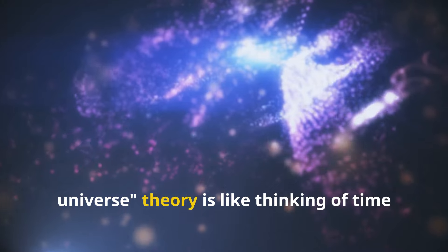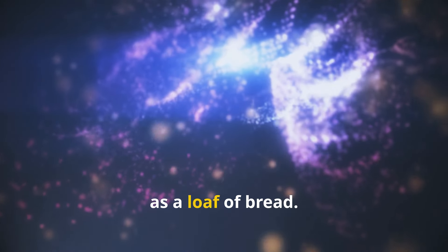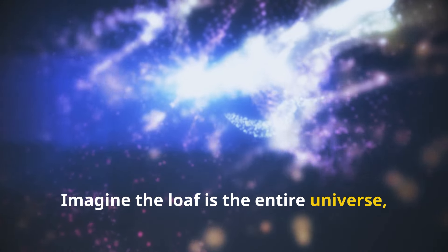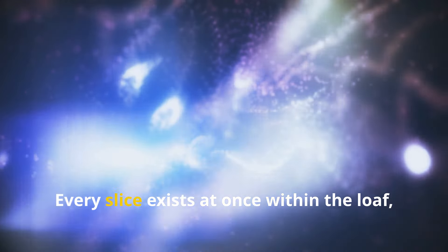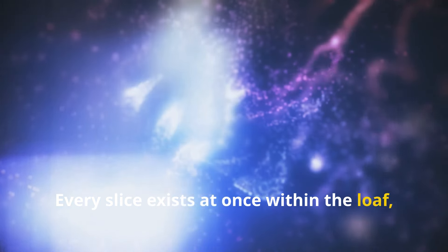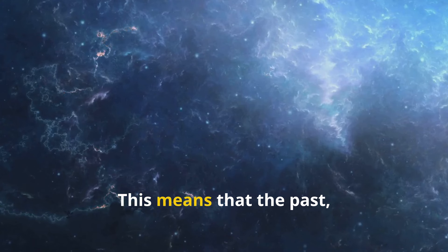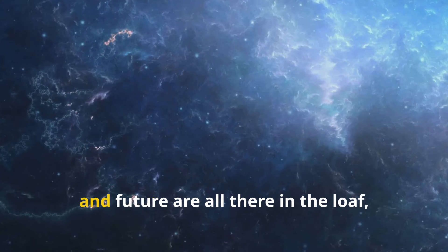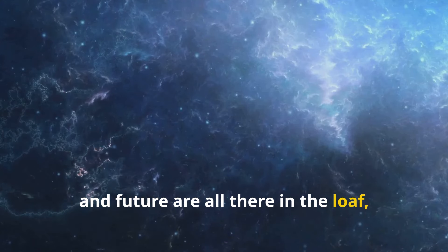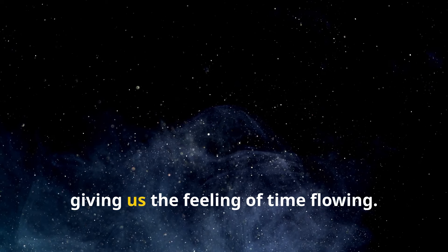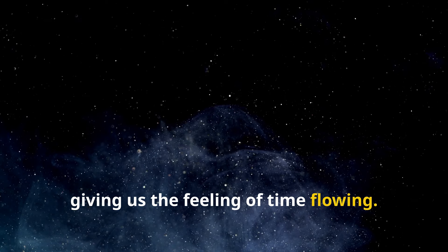The block universe theory is like thinking of time as a loaf of bread. Imagine the loaf is the entire universe, with each slice representing a different moment in time. Every slice exists at once within the loaf, but we can only see one slice at a time. This means that the past, present and future are all there in the loaf, but our consciousness moves through the slices one by one, giving us the feeling of time flowing.